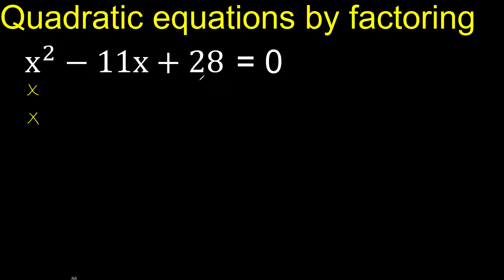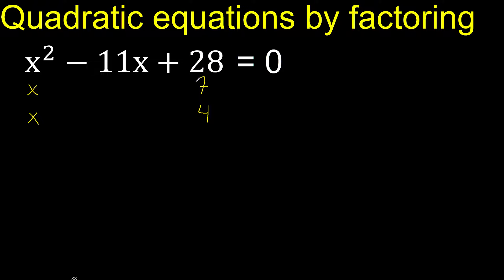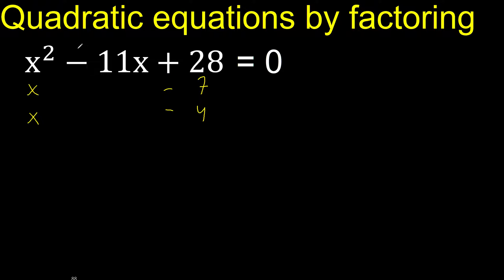Therefore, let's try 7 multiplied by 4, which is 28. Let's try plus: plus times plus is plus, or minus times minus is plus. Let's try minus, because here we have minus — let's analyze if it is correct.